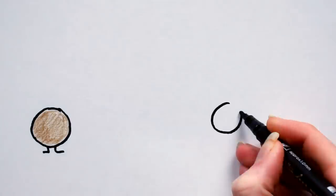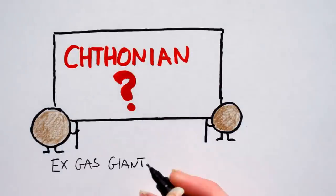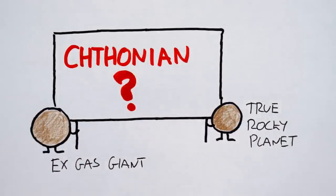Anyways, the term Chthonian planet is hypothetical and tenuous at best. I mean, how do you tell the difference between a rocky terrestrial world and a long dead gas giant if they essentially look the same?